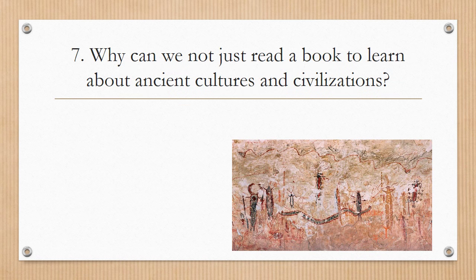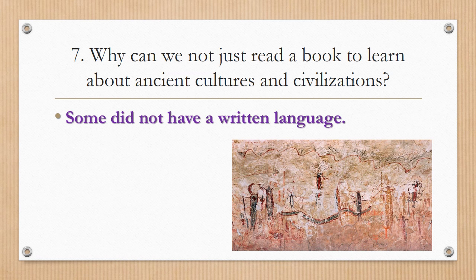Number seven: why can we not just read a book to learn about ancient cultures and civilizations? The reason is because some did not have a written language. Many ancient cultures wrote in pictures, and some did not write at all. The stone pictures painted on cave walls don't have letters or words — they most likely used symbols. As historians, we take artifacts and images and interpret what they mean. Sometimes we don't know exactly what they meant, but we can look at multiple copies and make an educated guess.